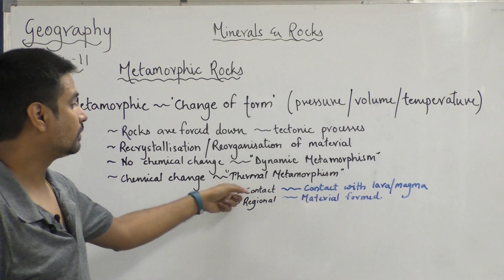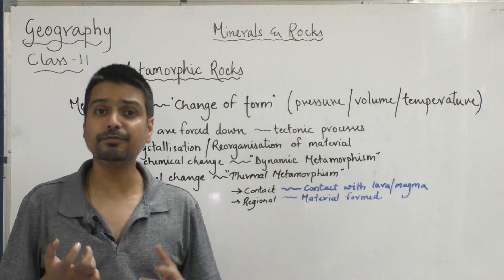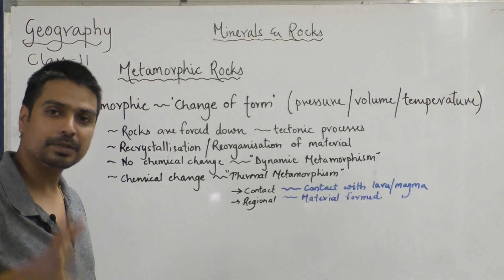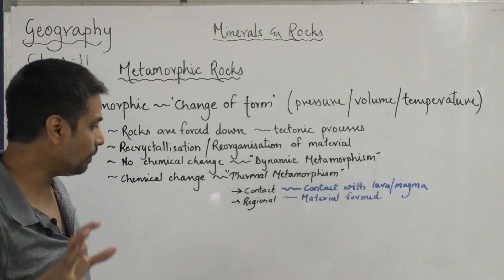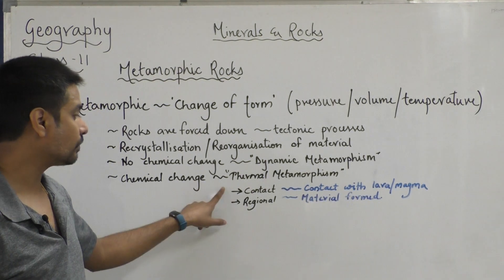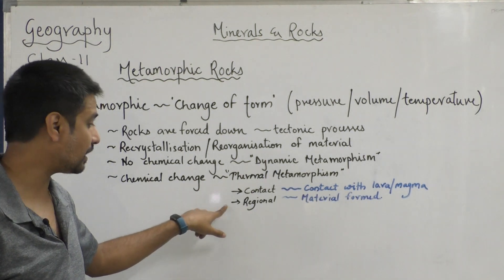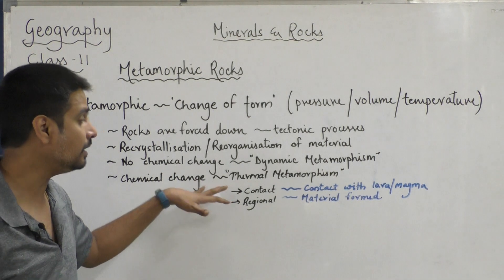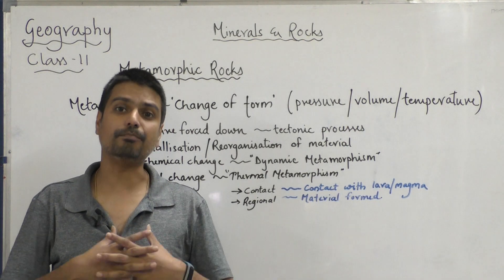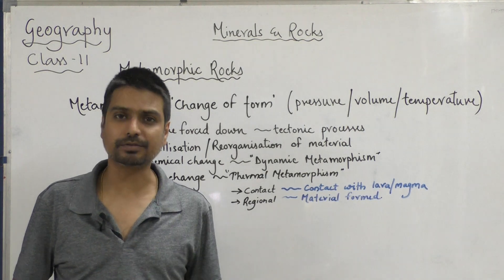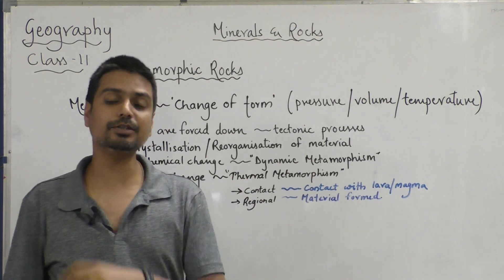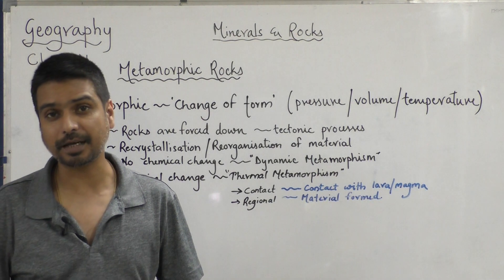And then comes thermal metamorphism. Thermal metamorphism, woh prakriya hoti hai friends, when there is a chemical change in the properties of the rock. Thermal metamorphism ko bhi kaha gaya hai that it takes place in two ways: one is contact process and other is regional. Contact metamorphism jo hota hai, that actually takes place when the lava or magma actually goes ahead and gets in contact with the rock. Toh yeh heat ke karan jo change hone lagta hai, woh thermal metamorphism kehlaya jata hai.